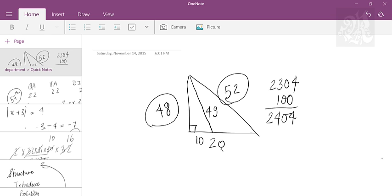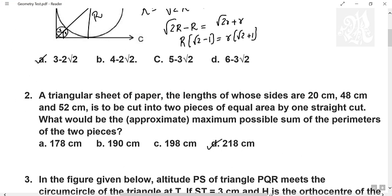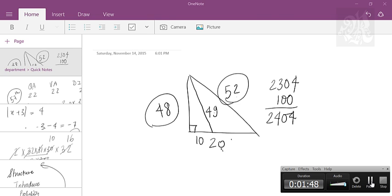So now your lengths are known to you. 48, 10, 49. 49, 10, 52. Add all of that. What is the answer that you get? 218. That's the answer 218. Please note it down.